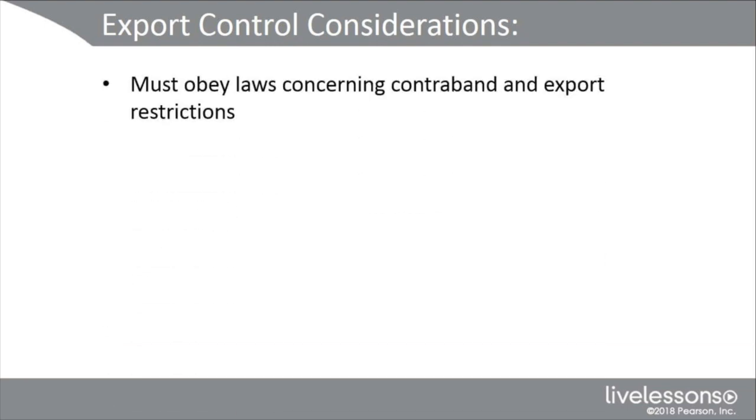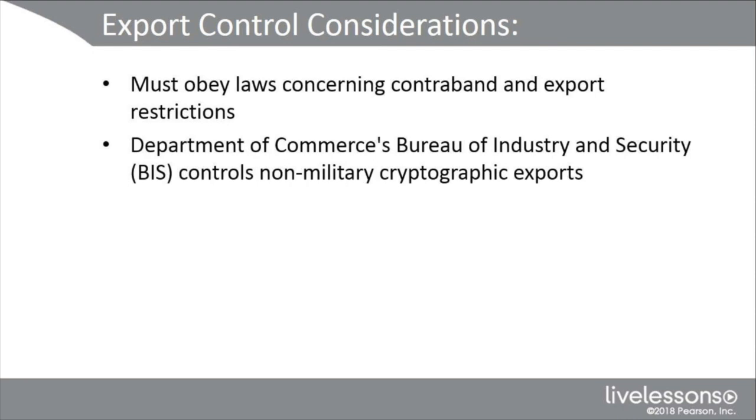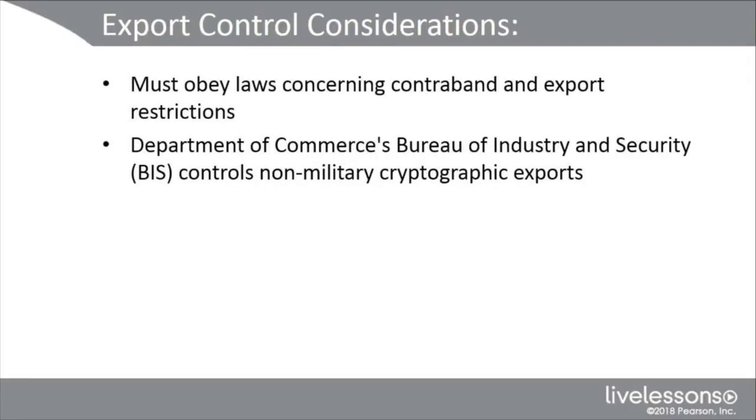Suppose Brio has just brought on a client involved with exporting software to a number of other companies. As the CISO, you should inform them about the added restrictions and costs. You must obey the laws concerning contraband and export restrictions. The Department of Commerce's Bureau of Industry and Security (BIS) controls non-military cryptographic exports. Since 2009, non-military cryptographic exports from the U.S. have been under this organization's umbrella, with limitations when exporting to declared rogue states and terrorist organizations. Crypto systems must be registered with the BIS when exporting mass market encryption commodities, software, and components with encryption exceeding 64 bits.